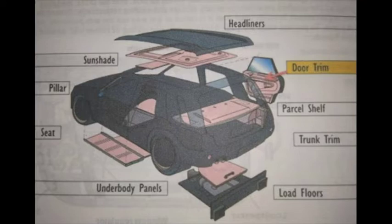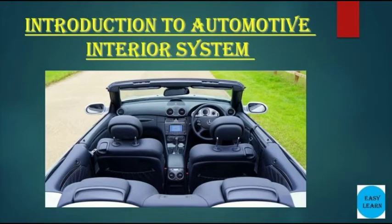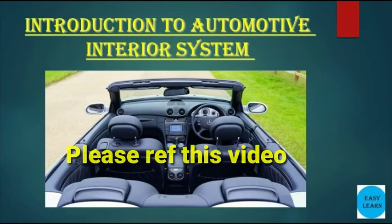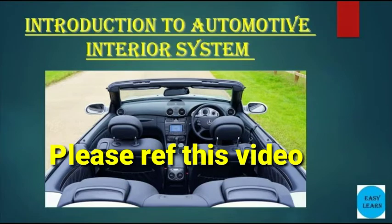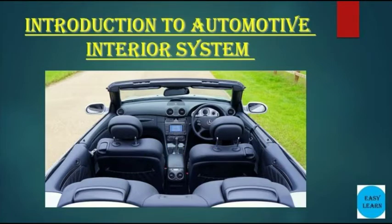The automotive interior system includes modules like instrument panel (in short IP), HVAC system — that is heated ventilation and air conditioning — pillar trims, overhead modular system, seating system, etc.